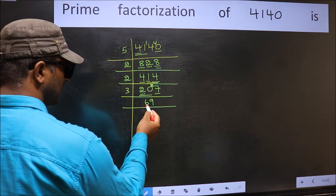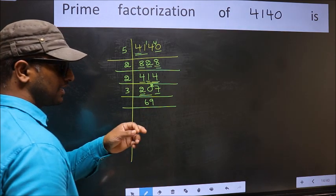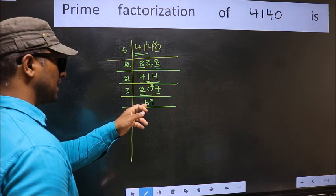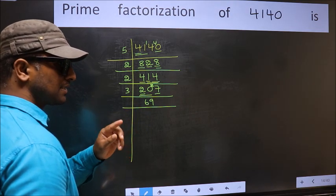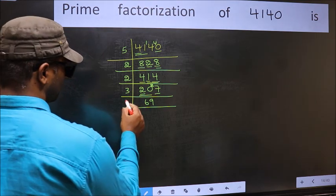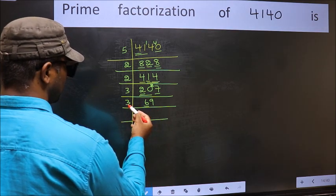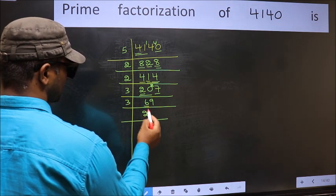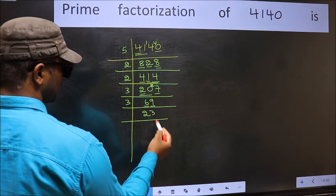Now to check whether it is divisible by 3 or not, add the digits. 6+9 equals 15. And 15 is divisible by 3. So this number also divisible by 3. So take 3 here. First number 6. When do we get 6 in 3 table? 3×2 is 6. The other number 9. When do we get 9 in 3 table? 3×3 is 9.